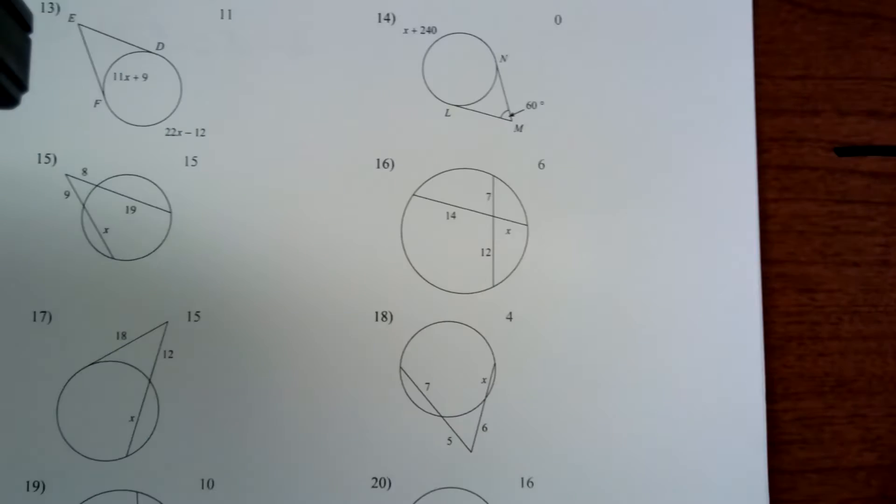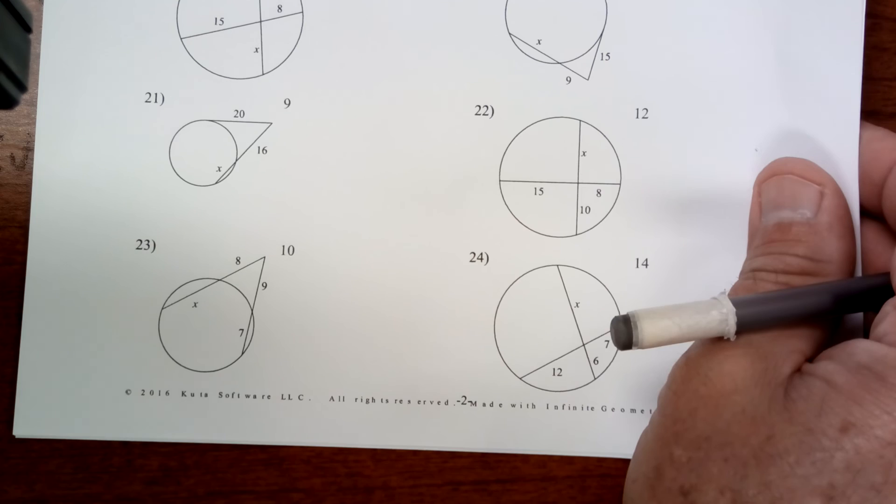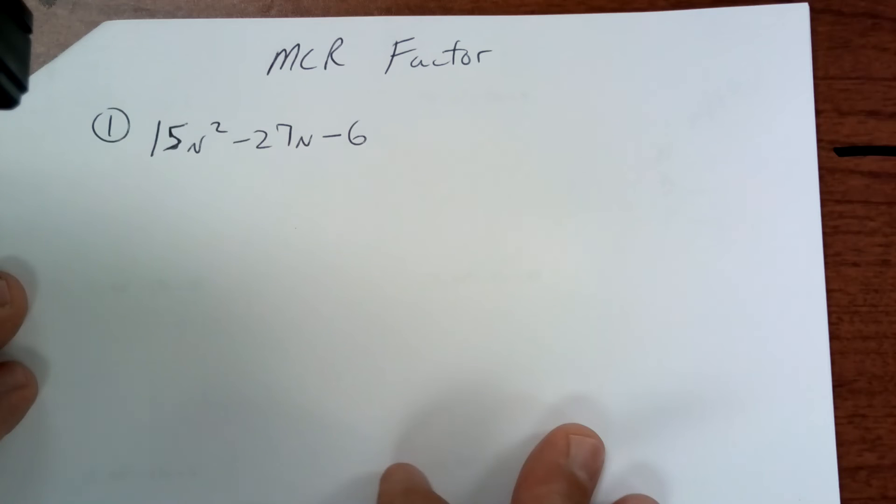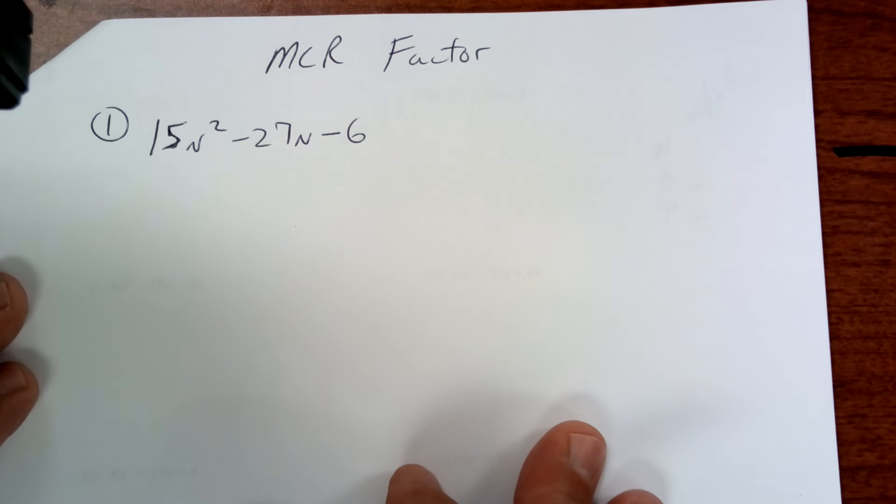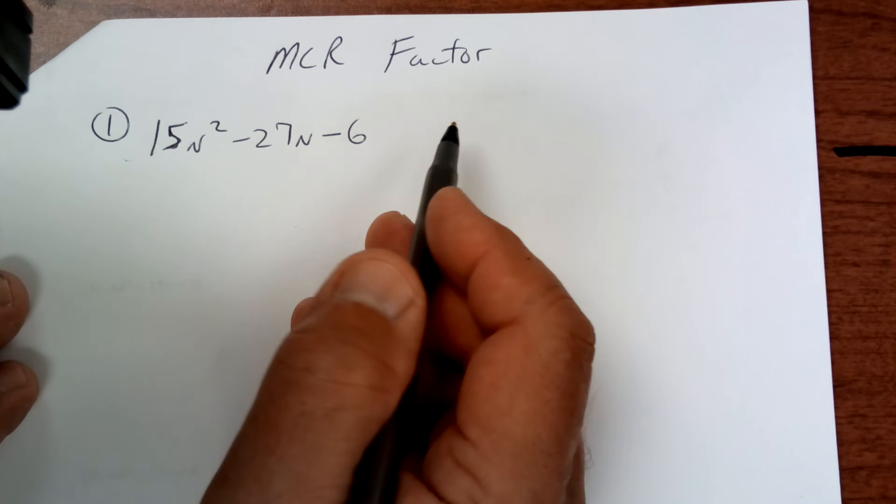And finally, we're going to turn our attention to MCR. And MCR, we're doing factoring. Now, pay attention to this factoring here. All right. Here's what you do. First of all, you always try to factor something out. I cannot factor anything out. Actually, no. I can take a 3 out.